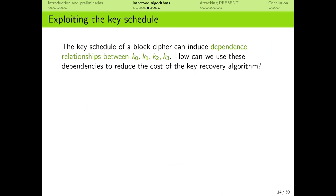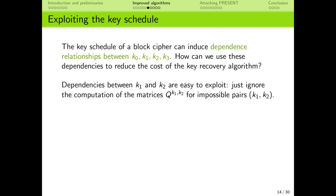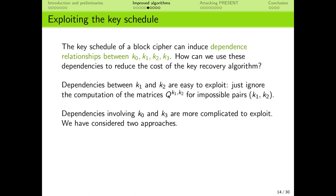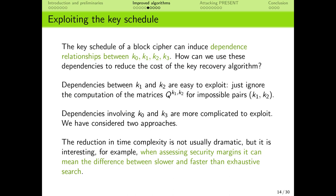Most real ciphers use some sort of key schedule, which means that the subkeys are not completely independent. So far, our algorithm assumes that all key bits are independent. Is it possible to use these dependencies to reduce the time complexity of the computations? For example, if k1 and k2 are dependent on each other, it is easy to omit any impossible pairs of values from the computation. However, exploiting dependencies involving k0 and k3 seems harder, as they are involved in the computation of the Walsh transforms and we need to compute the correlations for all guesses at the same time.